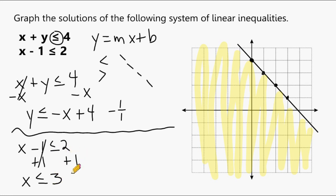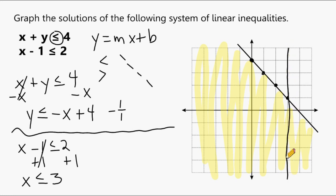This means we draw a vertical line through positive 3 on the x-axis. We locate positive 3 on the x-axis and draw a vertical line through it. It's a solid line because there's an equal-to symbol as part of our inequality.